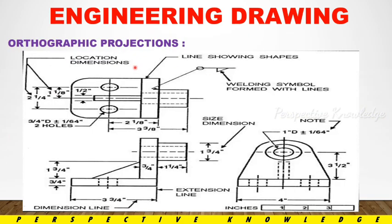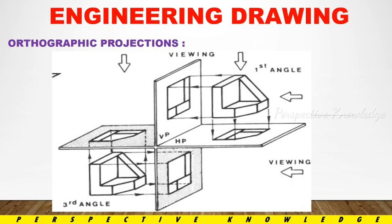Next is Orthographic Projection. We use the engineering drawing triangle and diagram showing all the properties and views — front view, top view, and side view. That is Orthographic Projection.